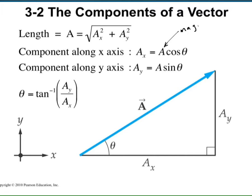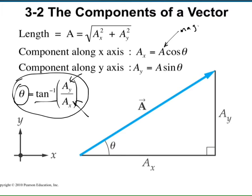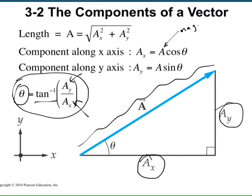If you know the magnitude and the angle, you can do the reverse and calculate the components. If you know the components, you can calculate the magnitude and angle. To find the angle from the components, just divide the y-component by the x-component and take the inverse tangent. From trigonometry: the y-component equals the magnitude times sine of theta, and the x-component equals the magnitude times cosine of theta — this follows directly from the Pythagorean theorem for a right triangle.